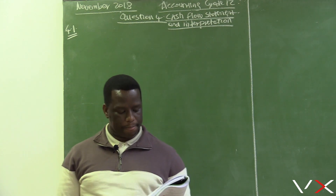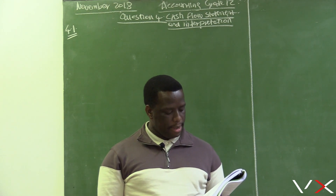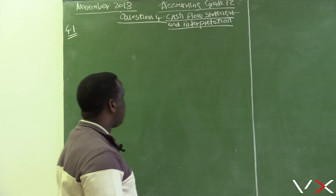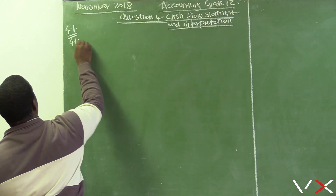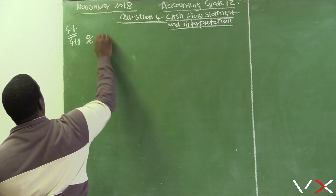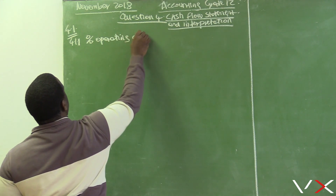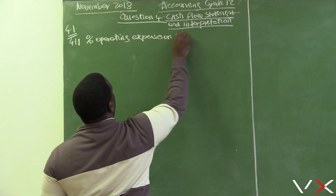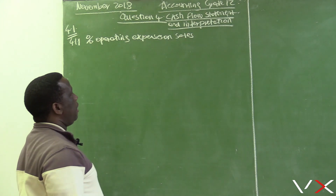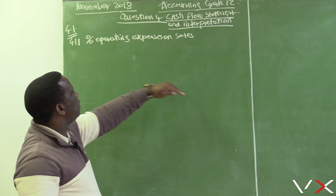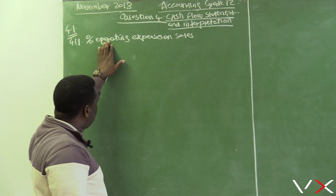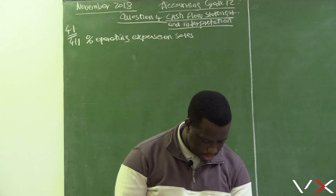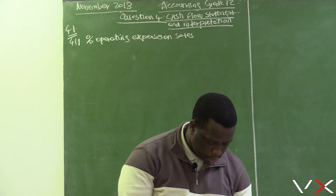Calculate the following for 2018: 4.1.1 - Percentage Operating Expenses on Sales. The formula is operating expenses divided by sales, multiplied by 100. We are calculating this for 2018, using information from page 14.